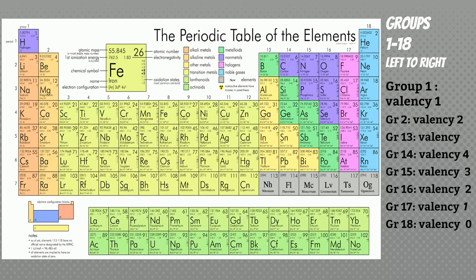Group 16 elements have 6 electrons in the outermost shell and require 2 electrons to gain stability, so valence is 2. Group 17 elements have 7 electrons in the outermost shell, so valence is 1. Group 18 elements are also called the zero group elements, or inert gases. They have 8 electrons in the outermost shell, so there is no need for electrons — that's why valence is 0.